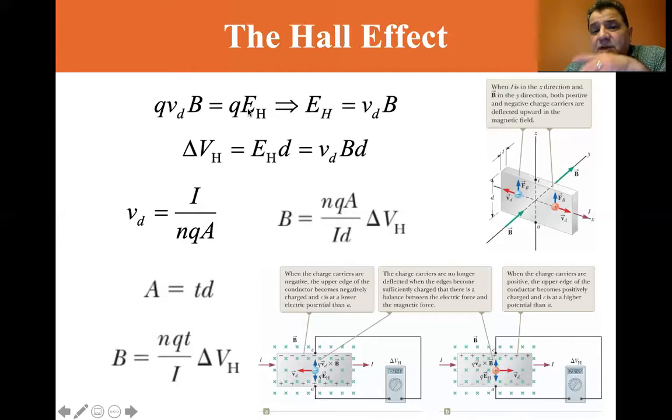q v_drift B is also equal to q E_H, the Hall electric field. So E_H, you can take the q out of each of those, E_H is equal to the drift velocity times the magnetic field.